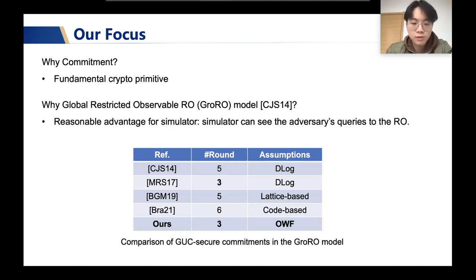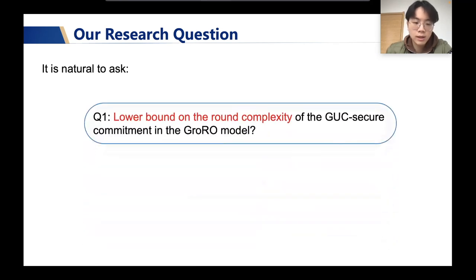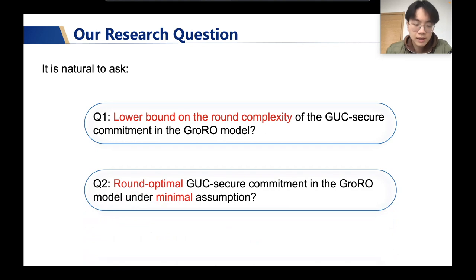Among them, ORS achieves the minimum round complexity and requires the weakest computational assumptions. It is well known that in the local RO model, UC secure commitment can be constructed in only two rounds. However, as you can see in this slide, the minimum number of rounds in previous work in the GRO model is 3. Therefore, it is natural to ask: what is the lower bound on the round complexity of GUC secure commitment in the GRO model? Furthermore, if such a lower bound exists, we are also wondering if we can give a round-optimal construction under minimal assumptions.